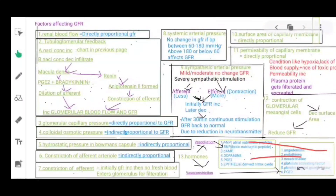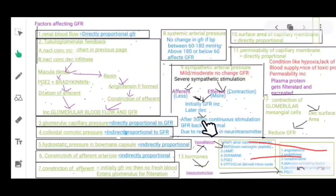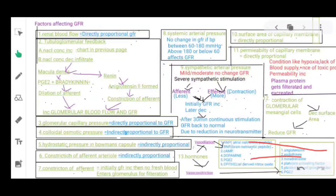Ninth: sympathetic stimulation — if there is mild or moderate stimulation, no change in GFR occurs. But with severe sympathetic stimulation, contraction of both afferent and efferent arterioles occurs, leading to an initial increase in GFR followed by a decrease. After 30 minutes of continuous stimulation, GFR returns to normal due to reduction in neurotransmitter levels.